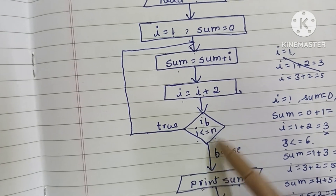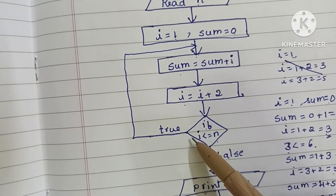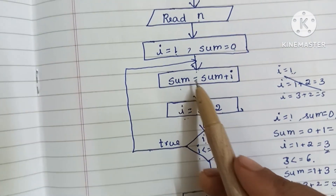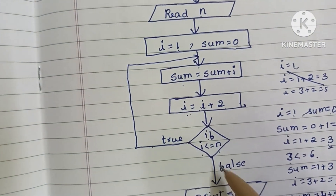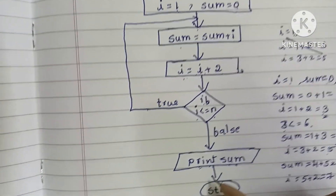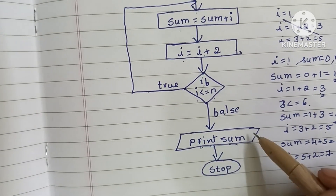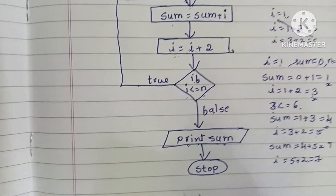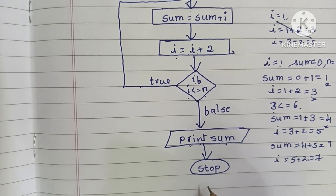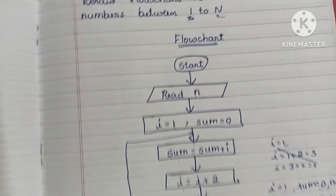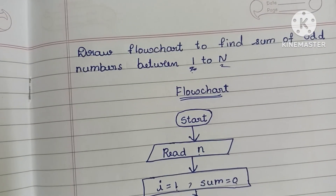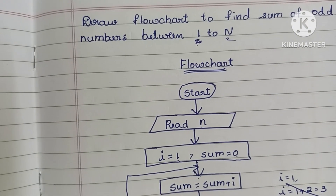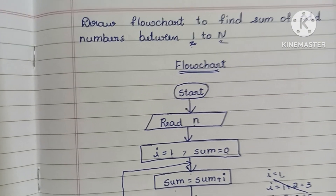The comparison i <= N is done within a diamond shape. If true, execute the sum process; if false, print the sum — output is written within a parallelogram shape. Finally, stop the flowchart using the stop statement. This is the complete flowchart to find the sum of odd numbers between 1 to N. Thank you for watching — if you like the video, please like and subscribe.